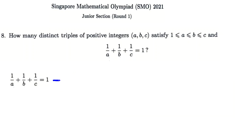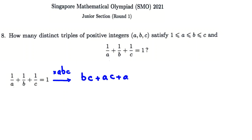Here, we want to get rid of denominators. Because the variables are integers, we multiply both sides by ABC. This gives BC + AC + AB = ABC.